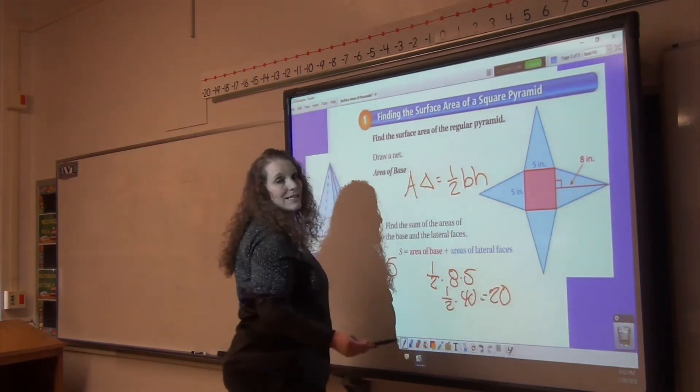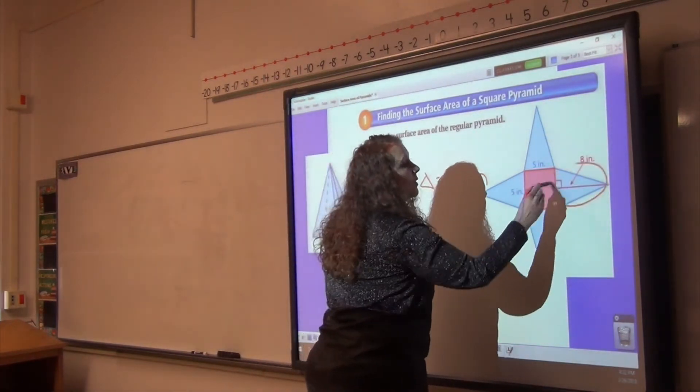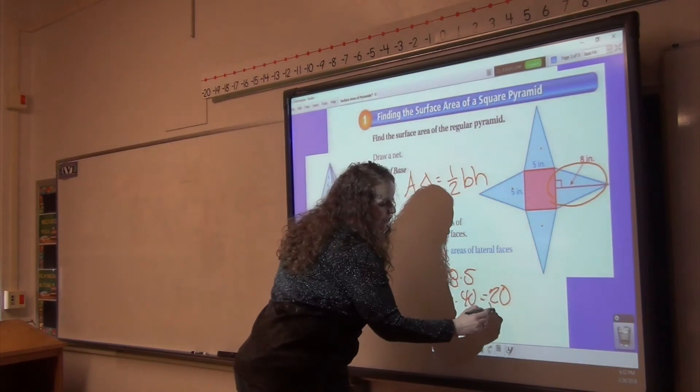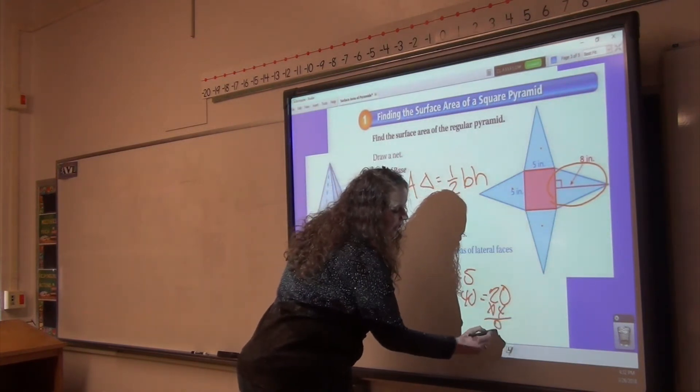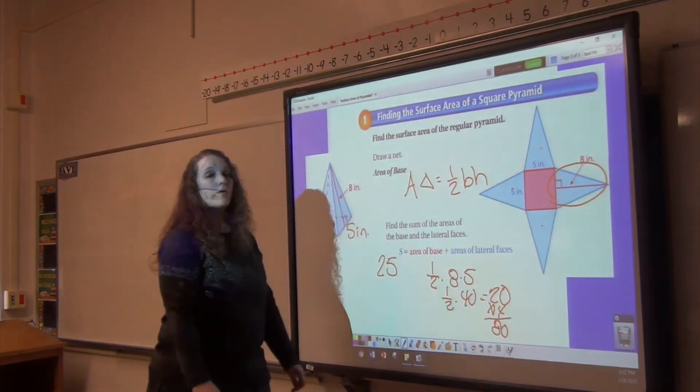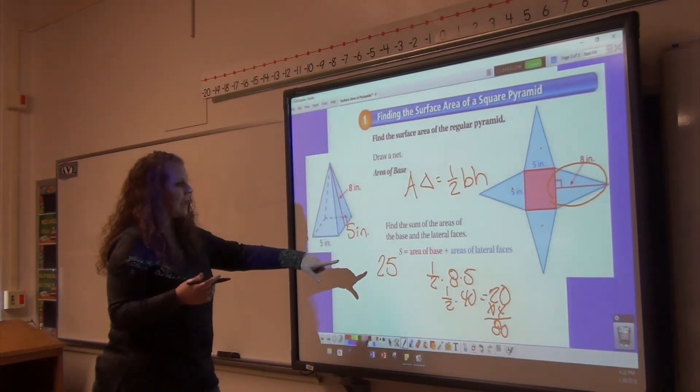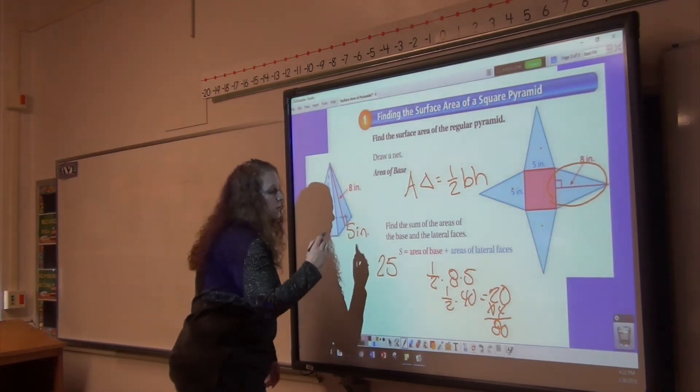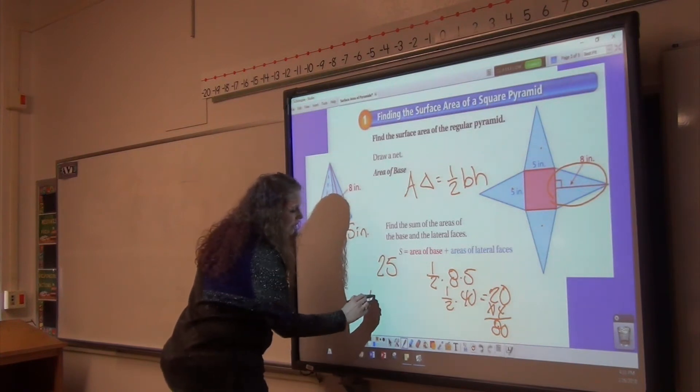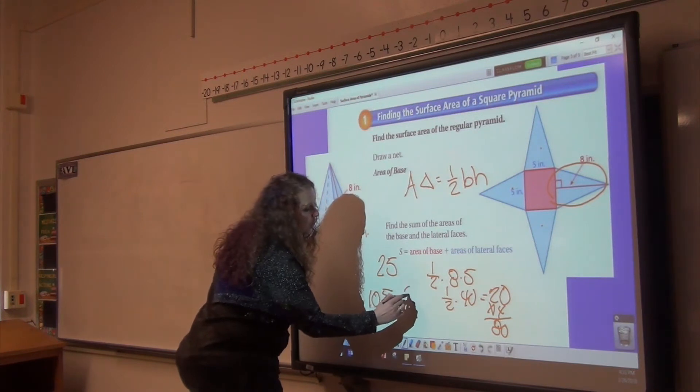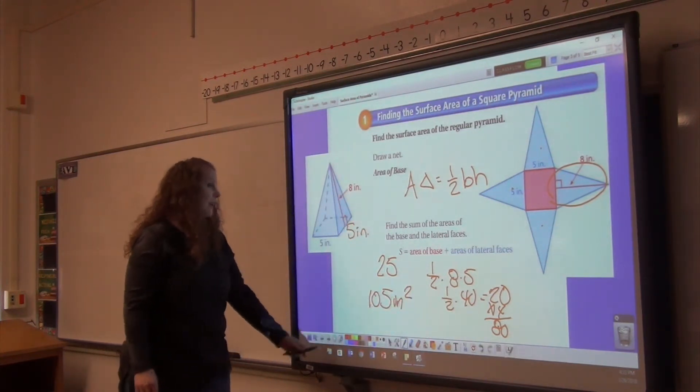I have four sides exactly like that. I found this one, but I've actually got four. So if I multiply that by four, I have 80 for all of my sides together. I need to take that 80 and add it to my base. So the surface area of this is 105 inches squared. It is squared because it is an area.